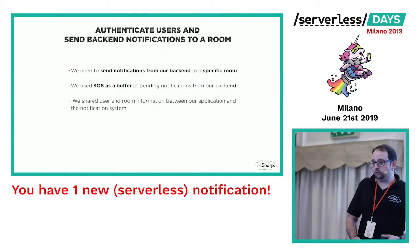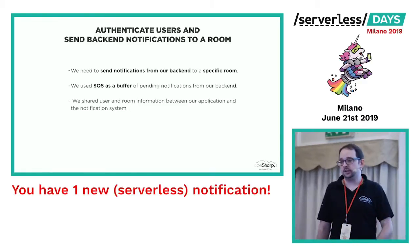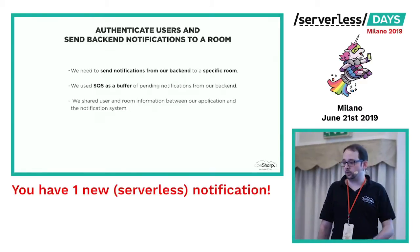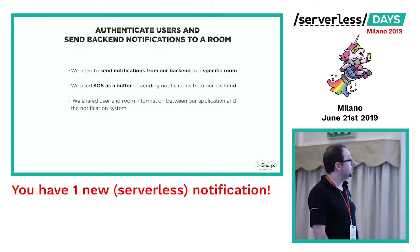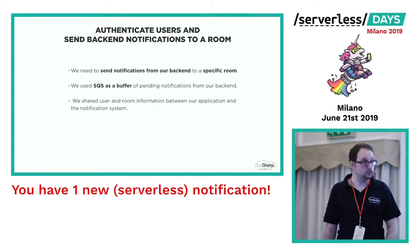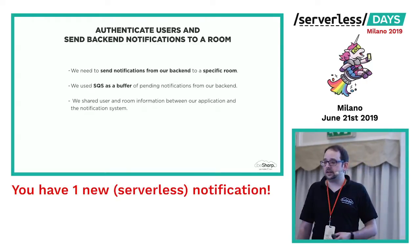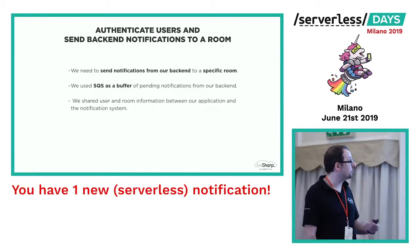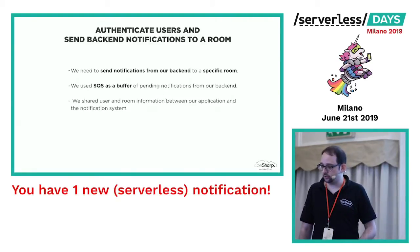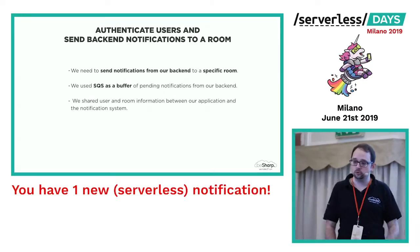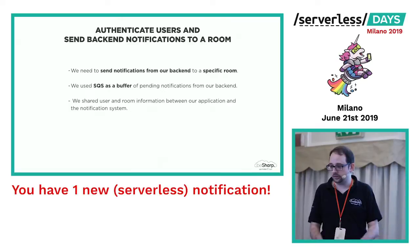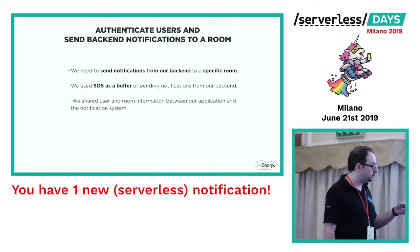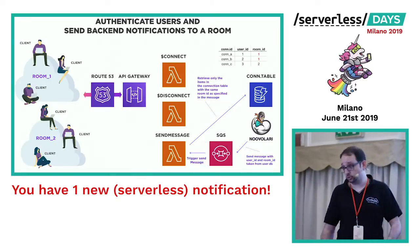Now we want to do something more. First, we want to send information directly from our backend, because this is a notification system, not a chat. And then we will see how to authenticate those calls. We also add an SQS queue in order to decouple the messages that are sent by our main product from the rest of the architecture, because we want to manage dead letter queues and have control over the messages sent by our application to make it more robust.